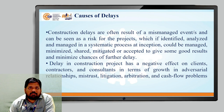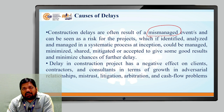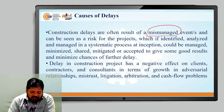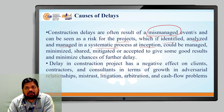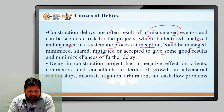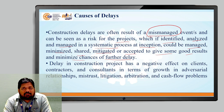Now, what are the causes of delay? In general, delays happen due to mismanagement — events where proper management has not been done. That is the primary reason. Mismanagement can be seen as a risk for the project, which if identified, analyzed, and managed in a systematic process at the inception of the project, could be minimized, shared, or mitigated to give good results and minimize the chances of further delay.